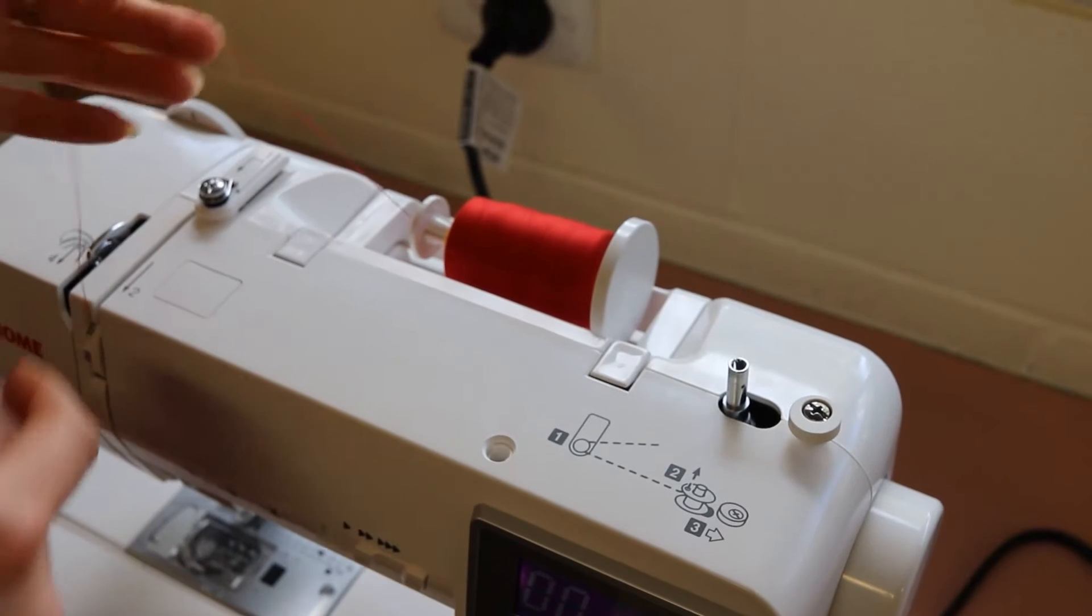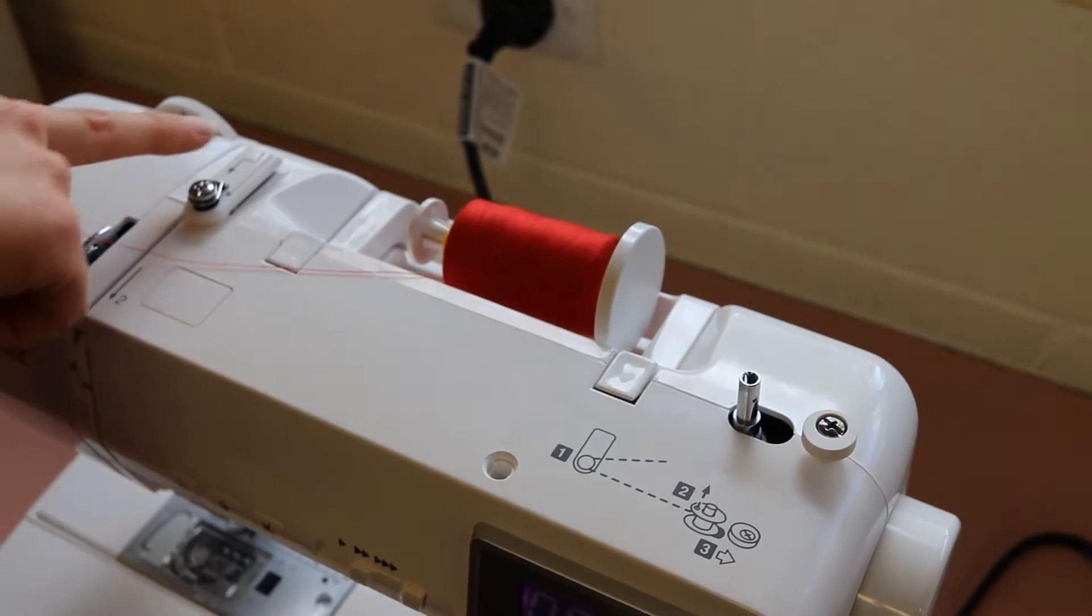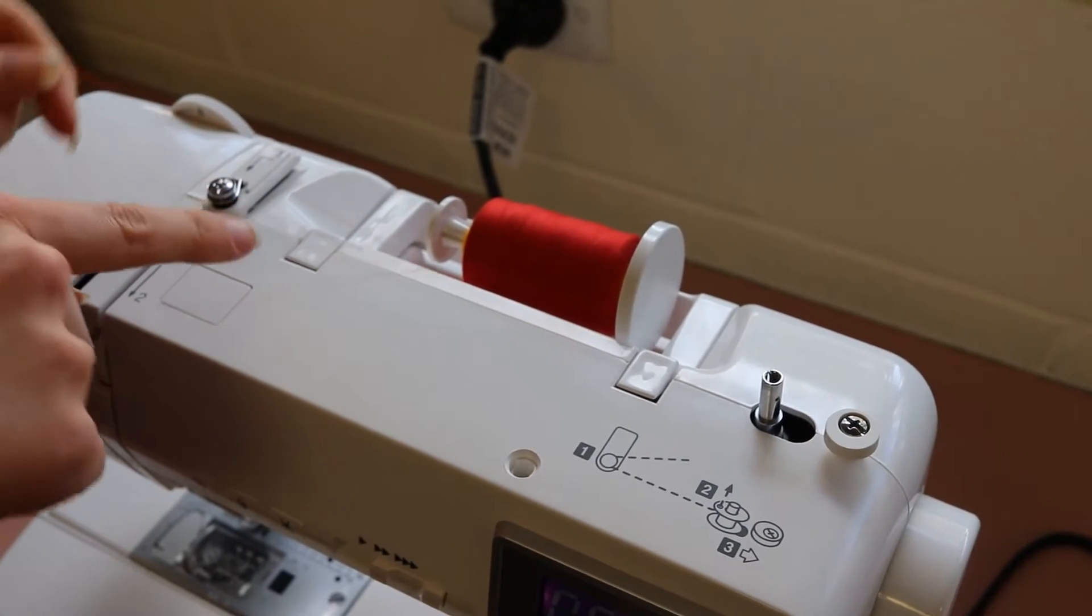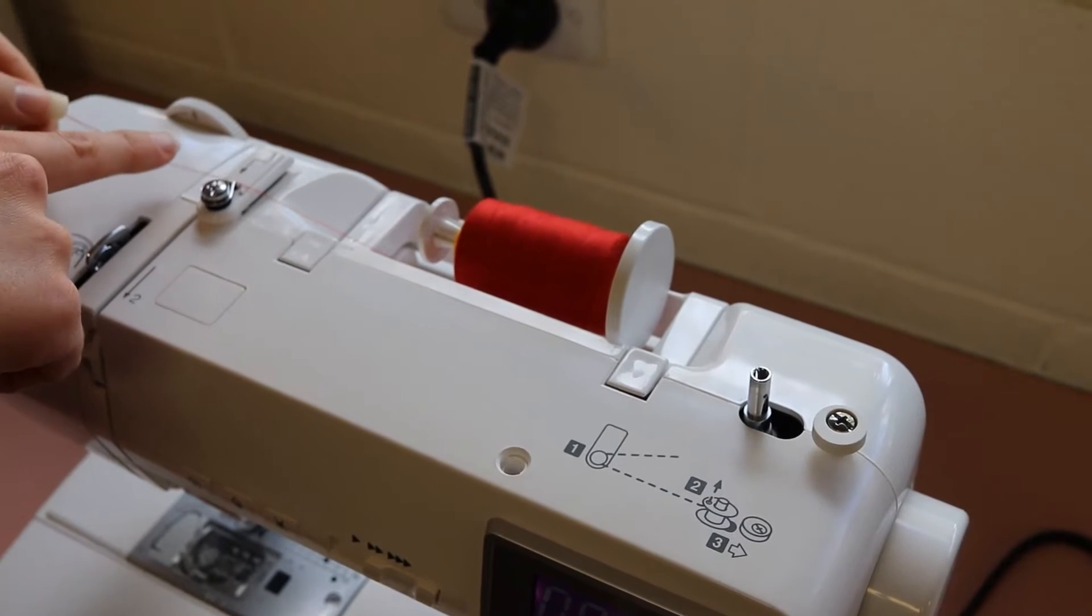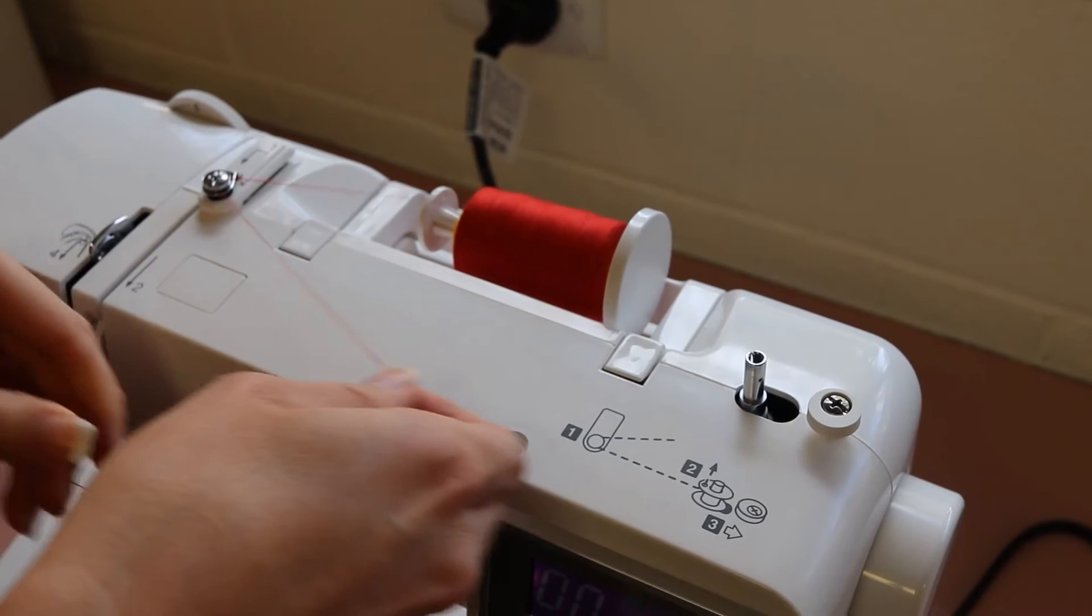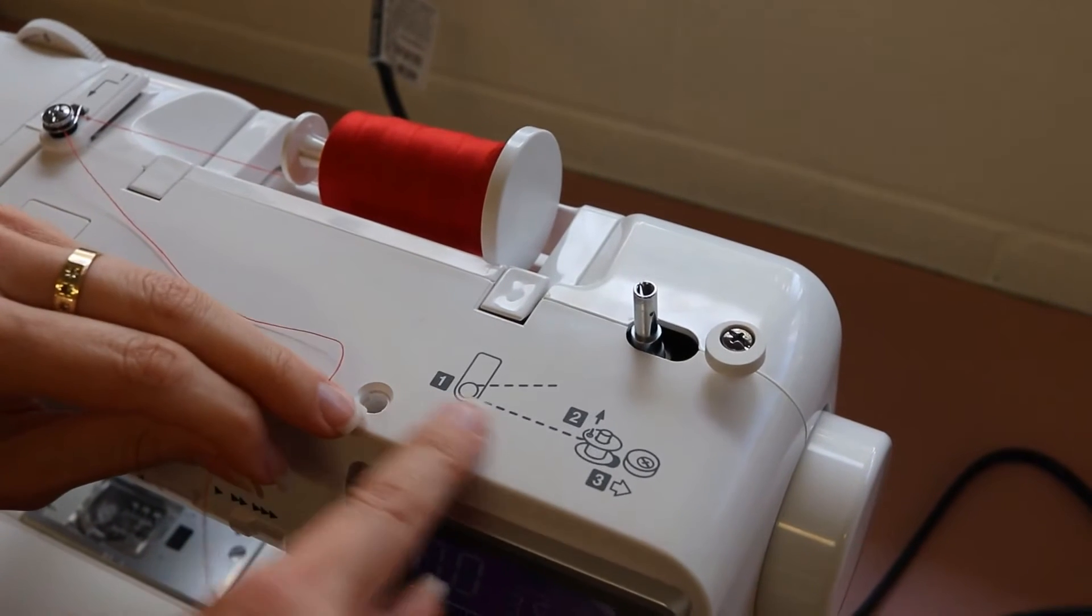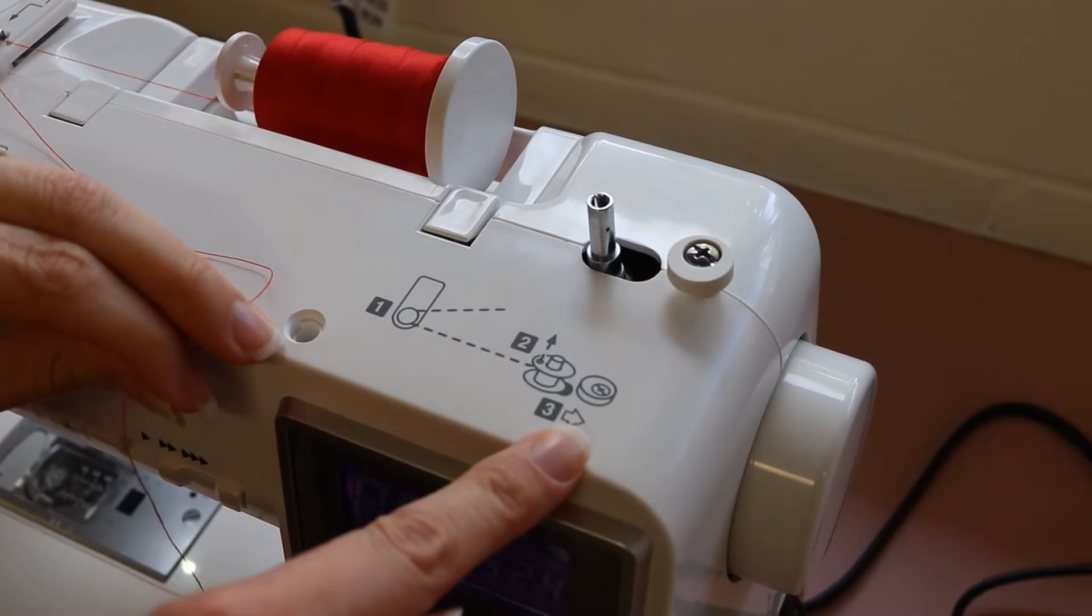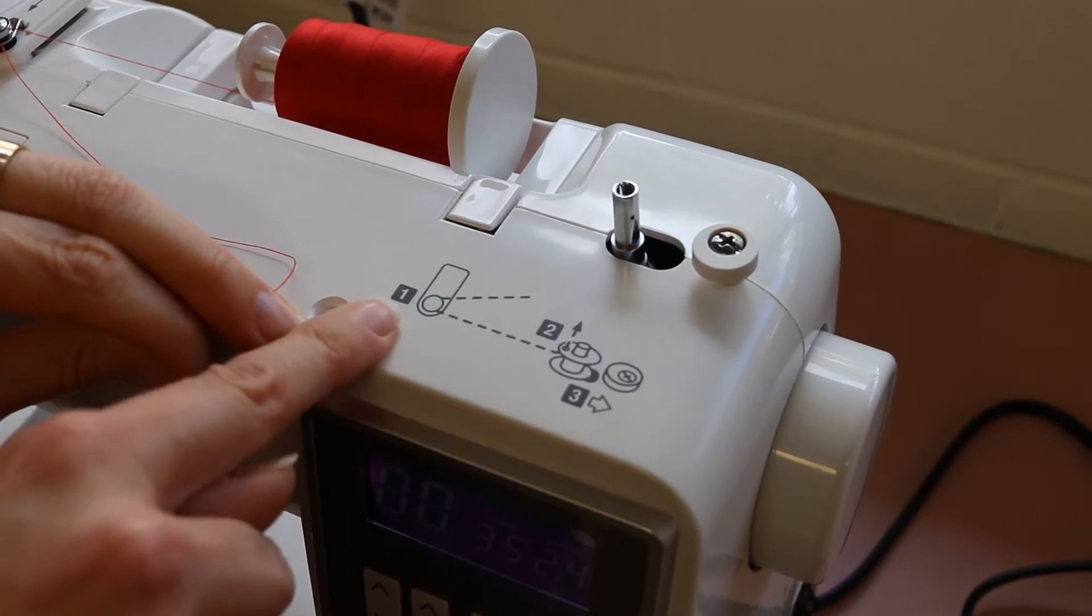Now, first up, grab the end of the thread and you're going to come over to step one where you're required to, from the top of this metal button, come around to the bottom. You can see over here on the right-hand side there's a diagram that's clearly showing what I'm doing so far, so I've just completed step one.